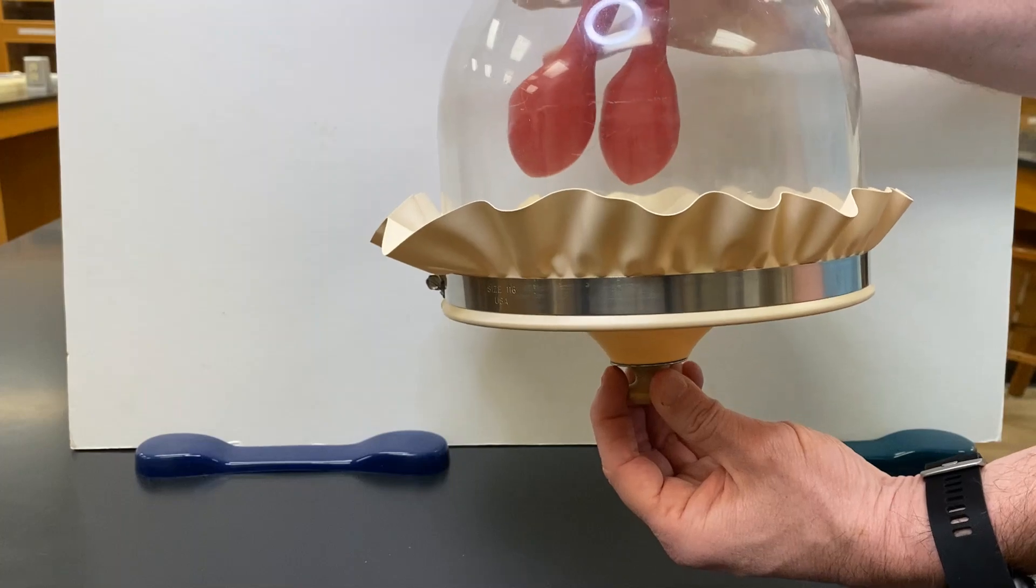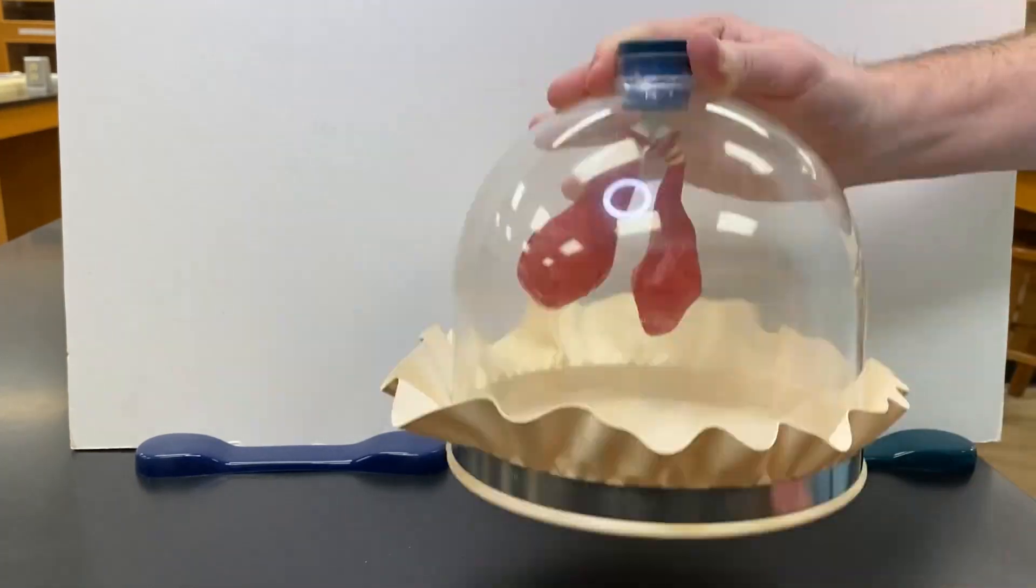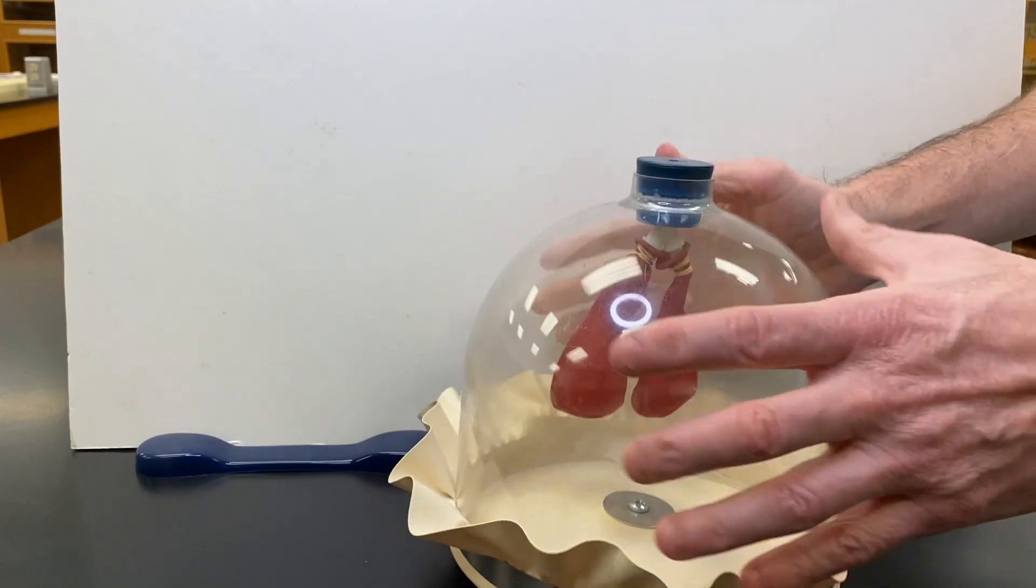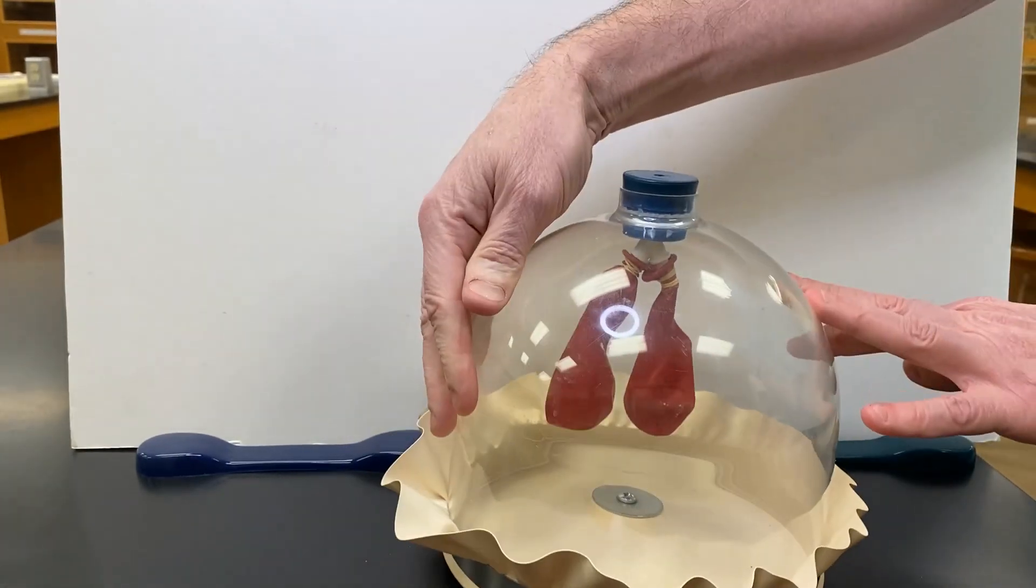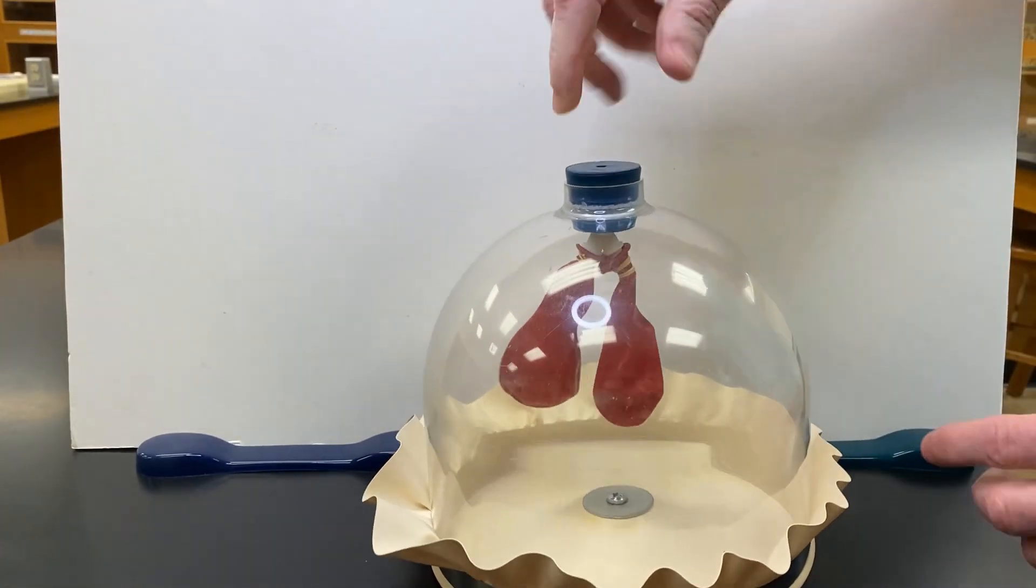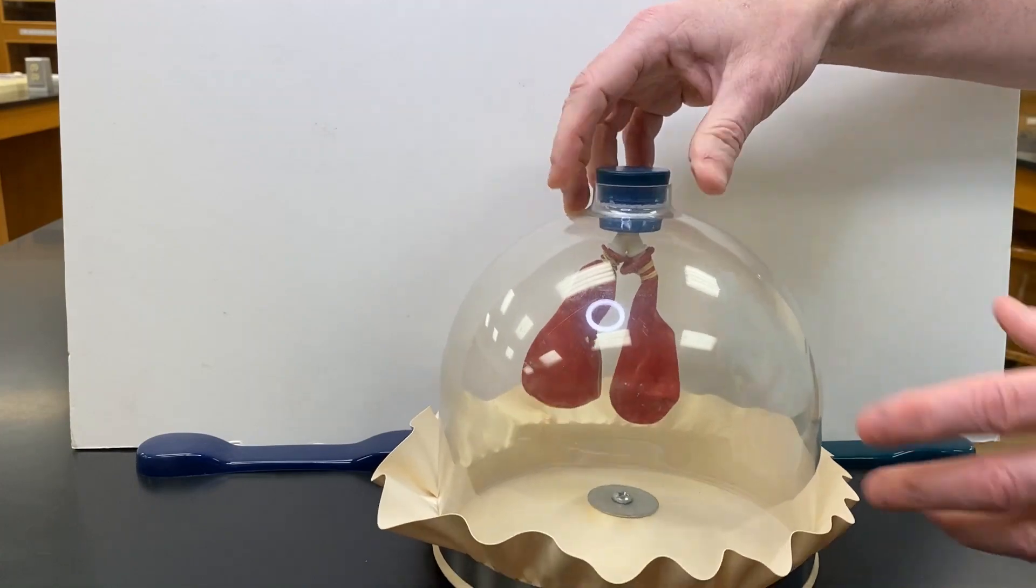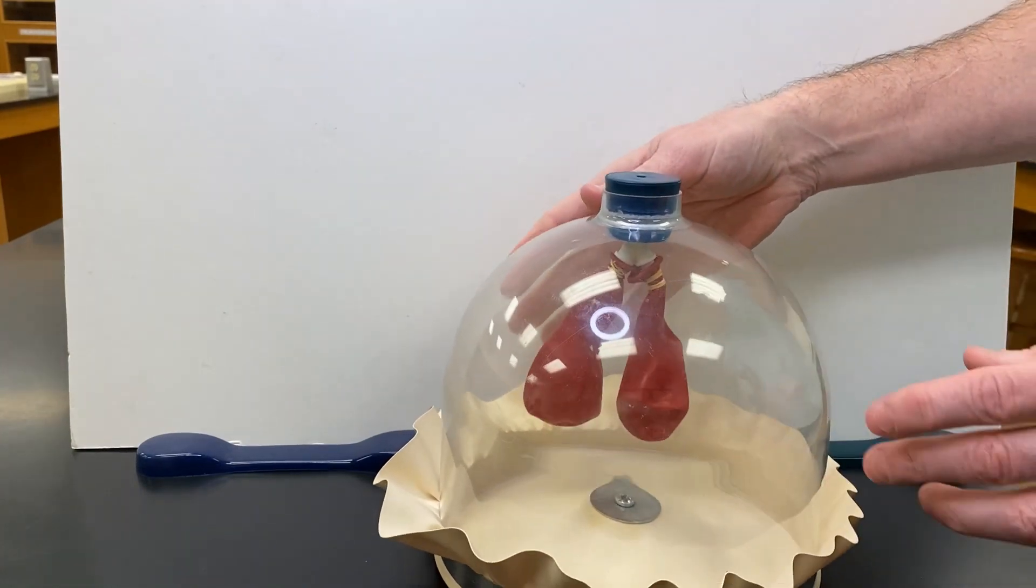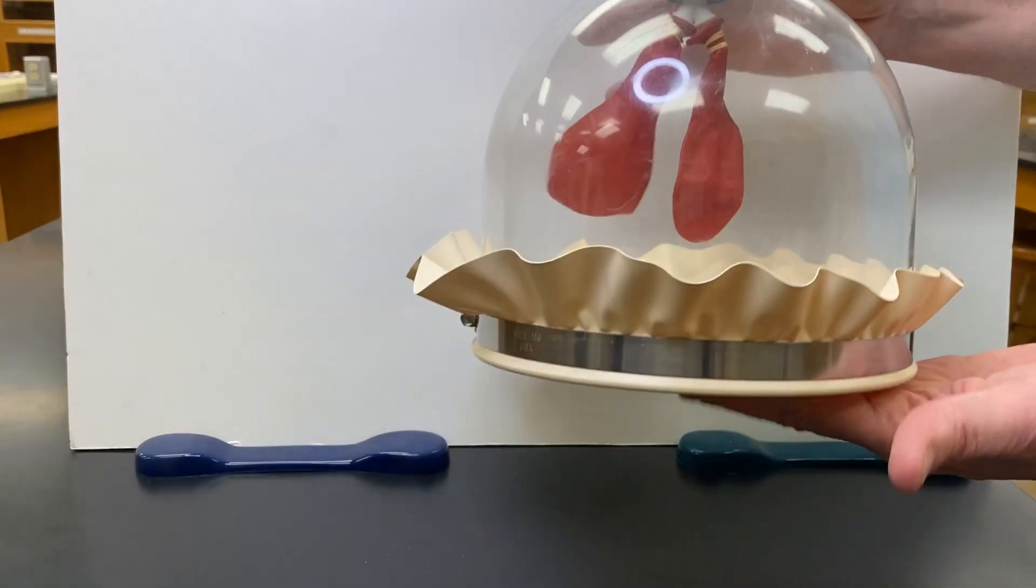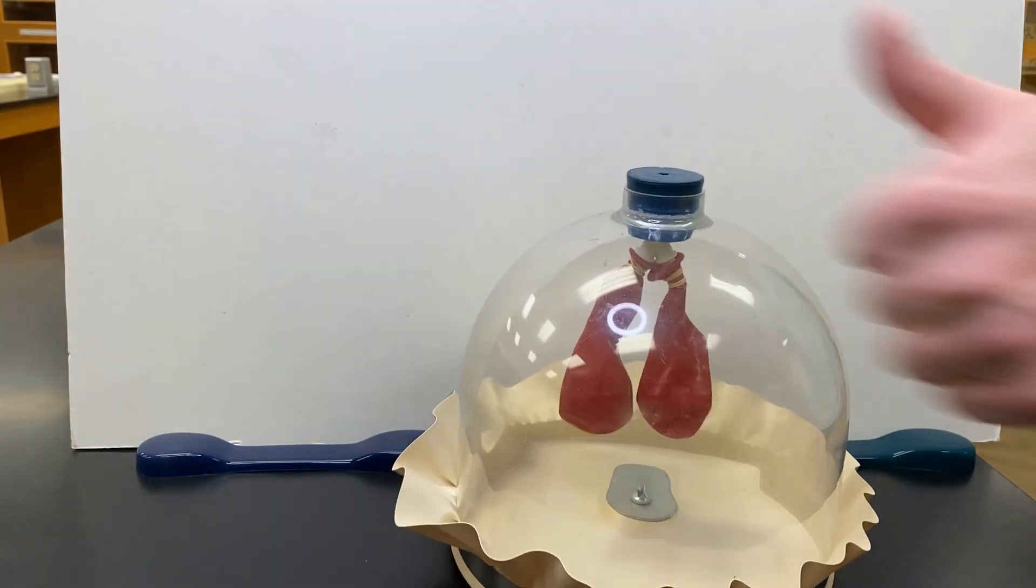So, thoracic cage, tracheal opening, balloons are our lungs, space in between is the pleural cavity, and this rubber sheet represents the diaphragm.